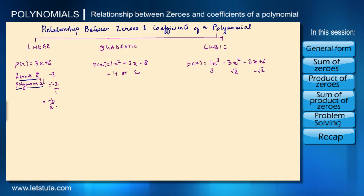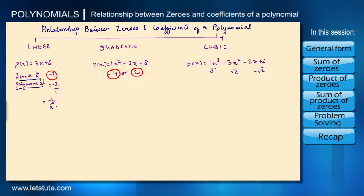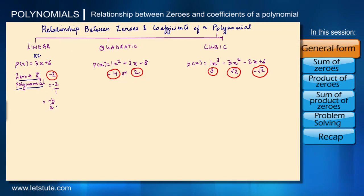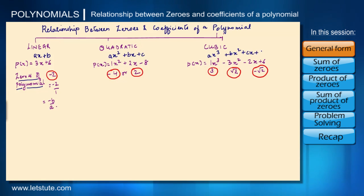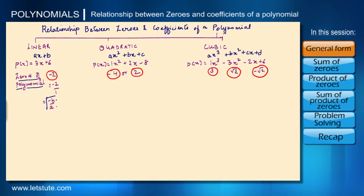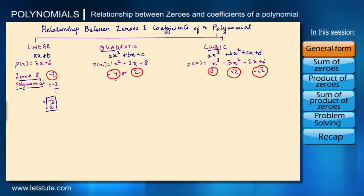Here I have listed down the zeros of the polynomial for each type: linear, quadratic, and cubic. The general form for a linear polynomial is ax plus b. The general form for a quadratic polynomial is ax squared plus bx plus c. And for cubic it is ax cubed plus bx squared plus cx plus d. We've already seen the relationship for a linear polynomial as minus b upon a.